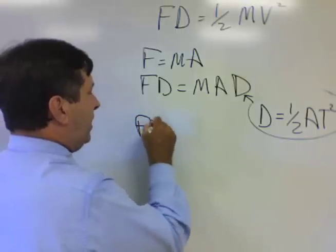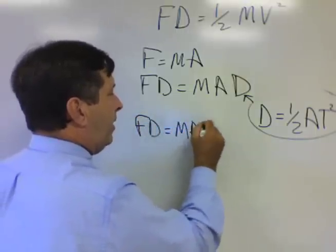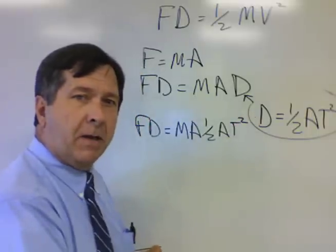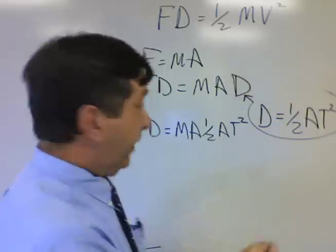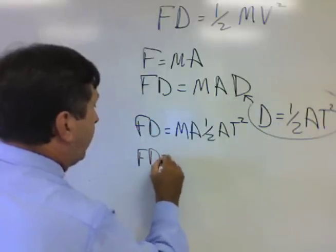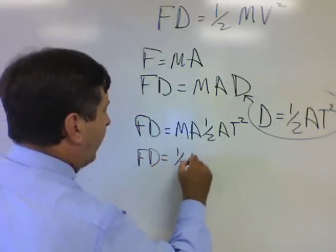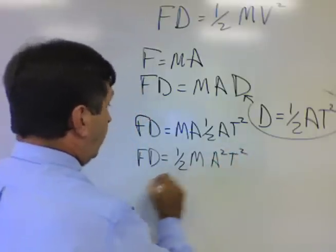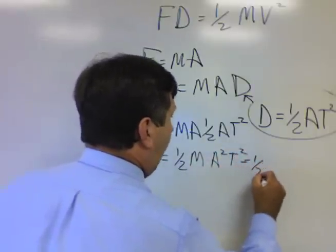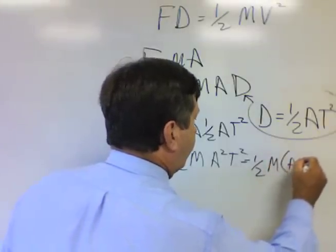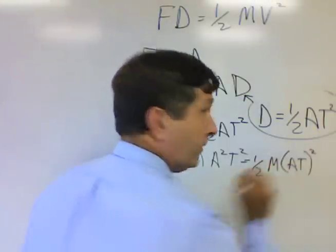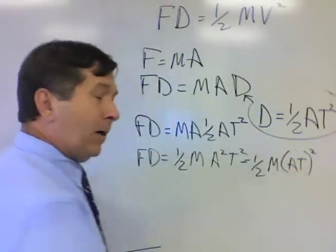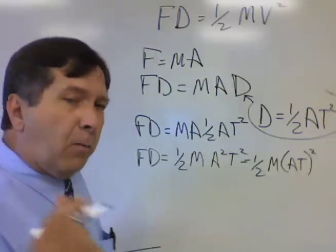That gives us Fd equals ma times one half a t squared. Let me group that a little bit better for you here — it's Fd equals one half m a squared t squared, which is equal to one half m times the quantity (at) squared.